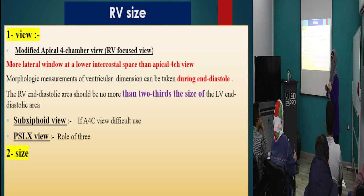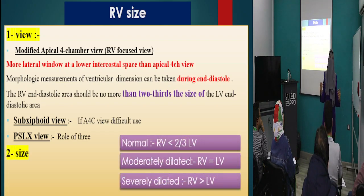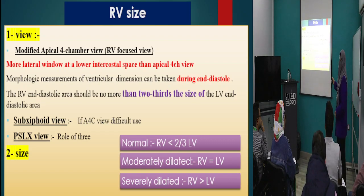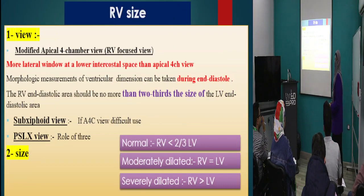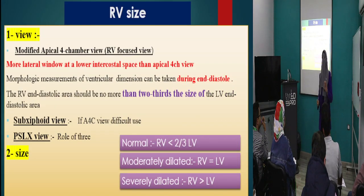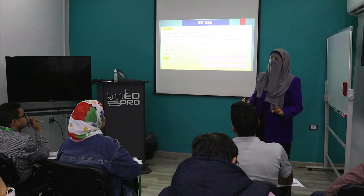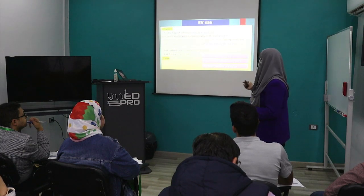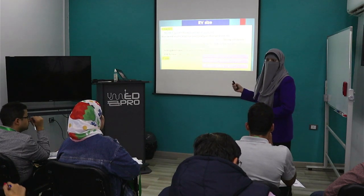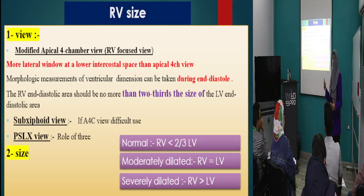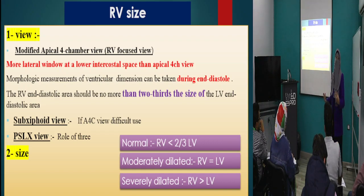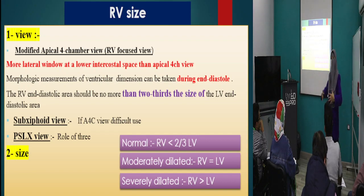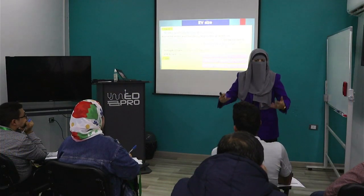When you assess the right side and comment on it, you include one of these classifications. If the RV is less than two-thirds of the LV, there is normal right ventricular function — no right ventricular heart failure. If the RV is equal to the LV by eyeballing, the RV is moderately dilated, meaning function is moderately impaired. If the RV is larger than the LV, it is severely dilated, meaning RV function is severely impaired.